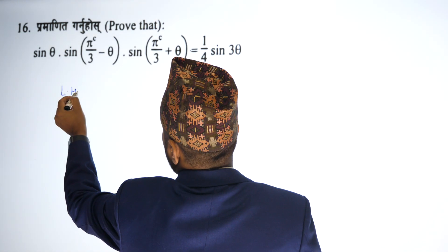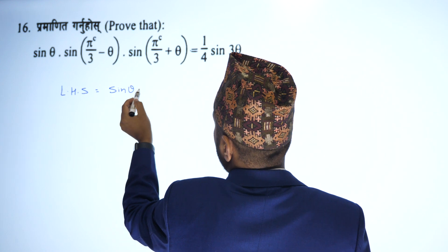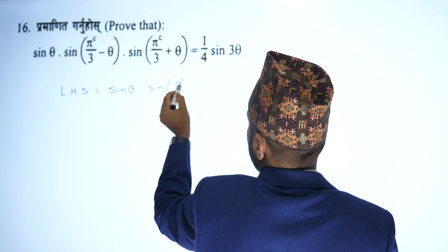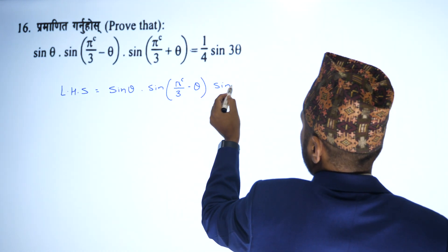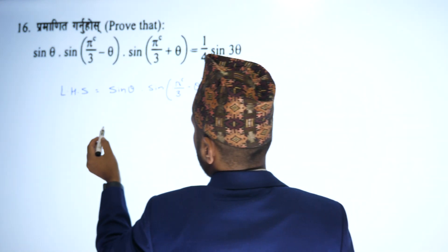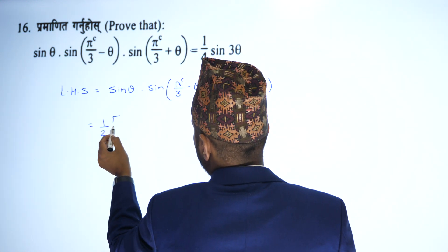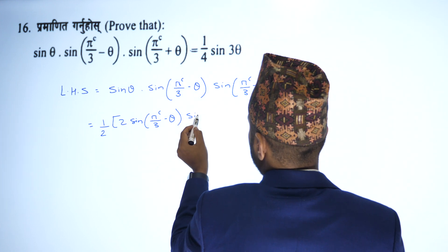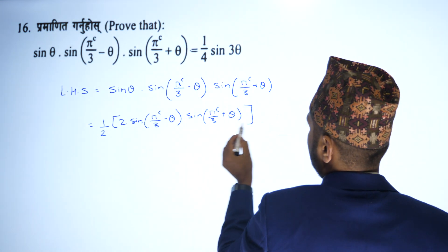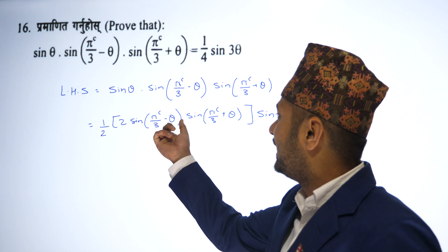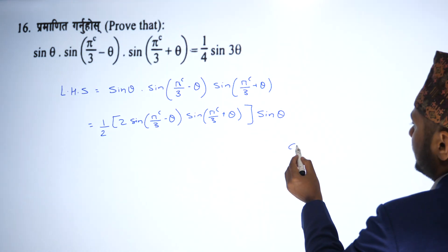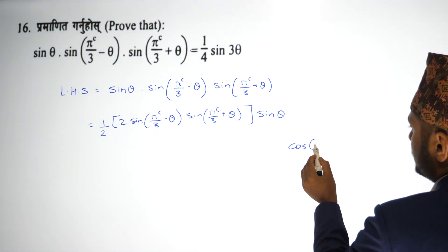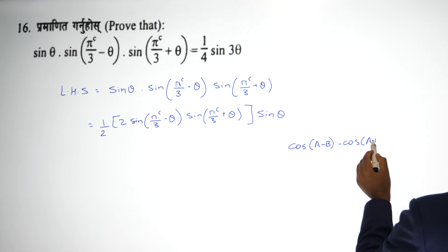Next question: prove that sin theta times sin(60 minus theta) times sin(60 plus theta) equals 1 by 4 times sin 3 theta. We use the product-to-sum formula: 2 sin A sin B equals cos(A minus B) minus cos(A plus B). Applying this, we can write sin(pi/3 minus theta) times sin(pi/3 plus theta) using the formula, giving cos(pi/3 minus theta minus pi/3 minus theta) minus cos(pi/3 minus theta plus pi/3 plus theta).